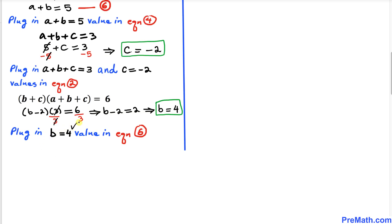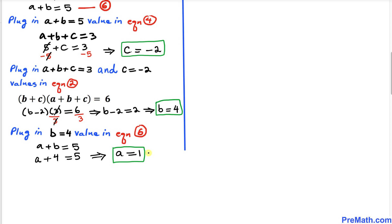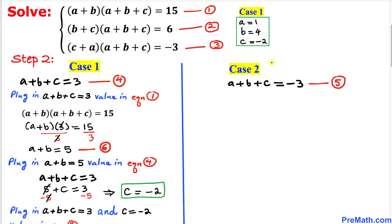Finally for Case 1, we plug b = 4 into equation 6: a + 4 = 5, so a = 1. Thus our Case 1 solution is a = 1, b = 4, c = -2.